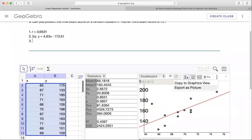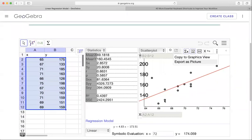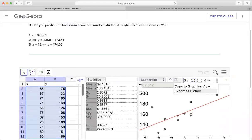So number three. You're going to have here that means x equal to 72. So using this model right here, I can predict that his or her final exam score, y, would be equal to 174.059.